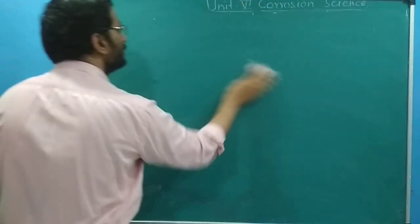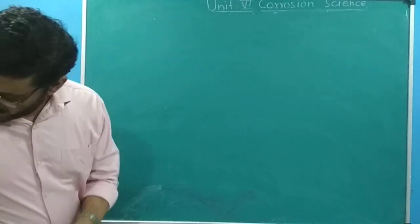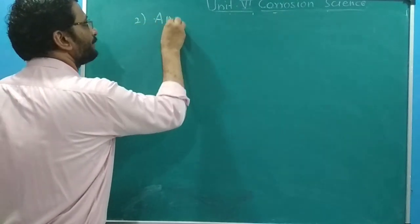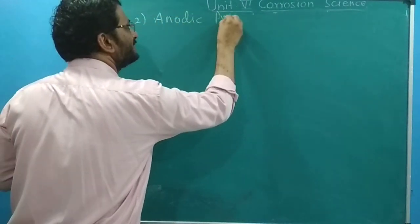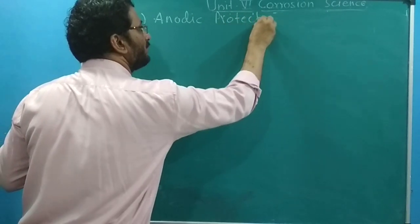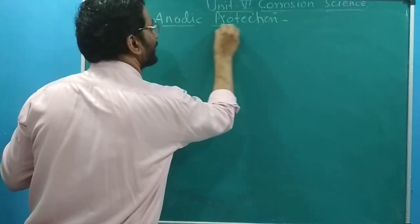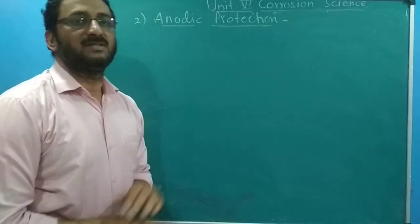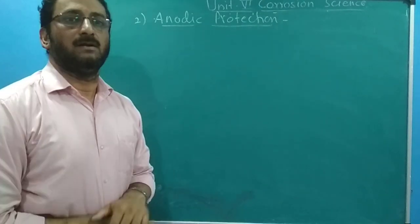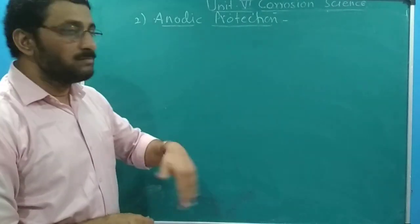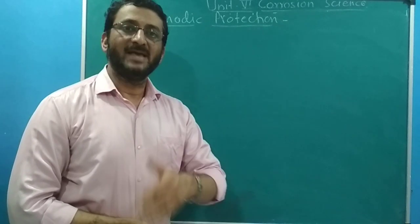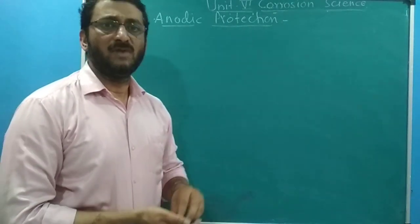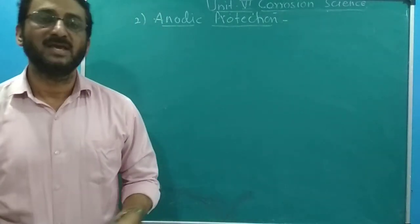We have seen two simple methods for cathodic protection. The next method is called anodic protection. In anodic protection, from the name itself we can get the meaning: in this method we force the metal to be more and more anodic by applying anodic current in the direction that makes it more anodic.